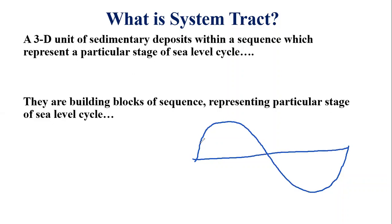Since a sea level cycle is composed of various stages — such as a regressive stage which is followed by the transgressive stage — in each stage of the sea level cycle a particular system tract develops.